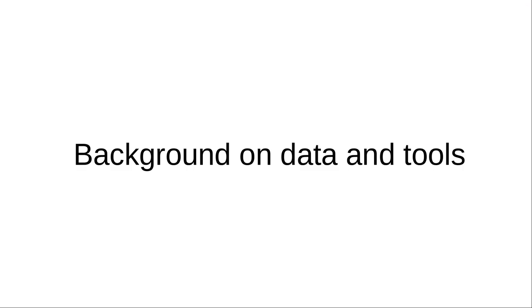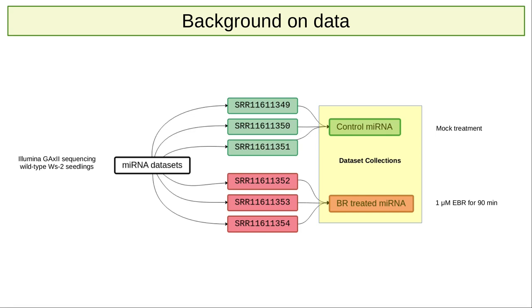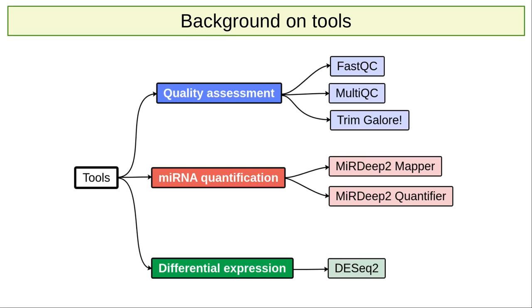Now we will provide some details about the data and the tools. For the analysis, we will use data generated by the Illumina Genome Analyzer 2x sequencing platform. MicroRNA was sequenced from three biological replicate samples of Arabidopsis thaliana in each of two conditions: control and epibrassinolide-treated samples. In order to simplify the analysis, the biological replicates will be grouped in Galaxy into data collections, which allow combining numerous datasets into a single entity that can be easily manipulated. In this part of the tutorial, we will use six main tools, which can be divided into three categories: quality assessment, microRNA quantification, and differential expression.